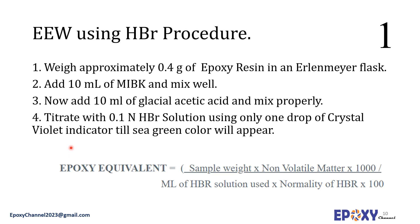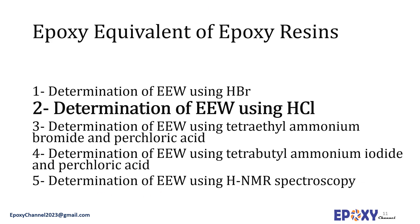The procedure for calculating EEW using HBr: weigh approximately 0.4 grams of epoxy resin in an Erlenmeyer flask, add 10 milliliters of methyl isobutyl ketone and mix well. Then add 10 milliliters of glacial acetic acid, mix properly, and titrate with 0.1 normal HBr solution. Based on the provided formula, you can calculate the epoxy equivalent weight. Now let's look at the second method: determination of EEW using HCl.